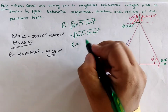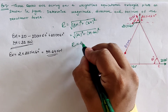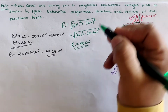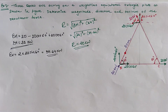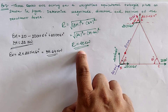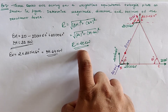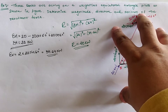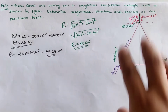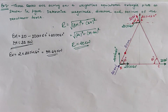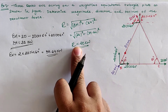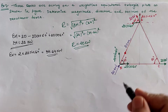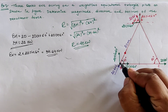Substituting 20 kN and 34.64 kN into the resultant equation, our resultant value is 40 kN. Now we have to locate this 40 kN with its direction as well as its distance. Since the system is a non-concurrent system, for the distance we assume that this resultant creates a clockwise moment with respect to location B.